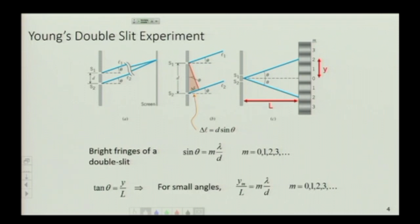That relationship we also saw can be related to how far these fringes are on a screen. So we say if the screen is really far away, like the patterns we were looking at, then the angles locating these fringes are really small.